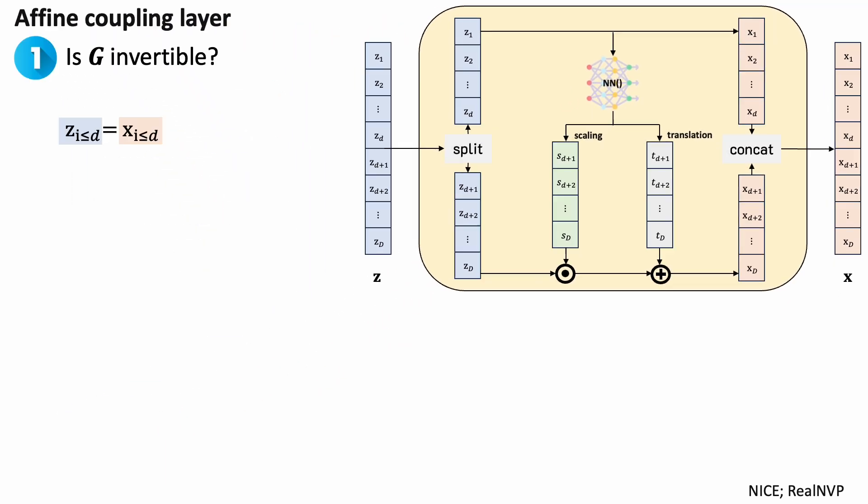Let's ask the two questions. First, is this generator invertible? Given x, we copy the first half. Then we compute the scaling and translation to invert the second half of z. Here, the neural network can be very complex and does not need to be invertible.